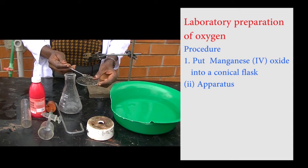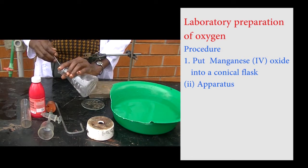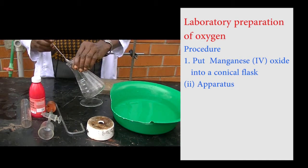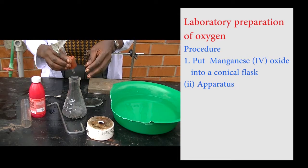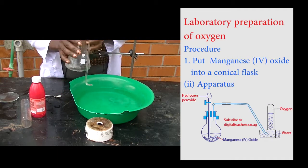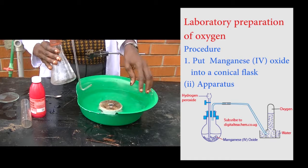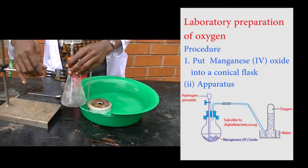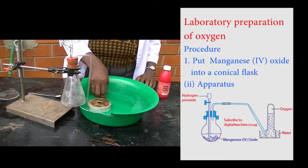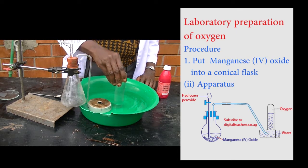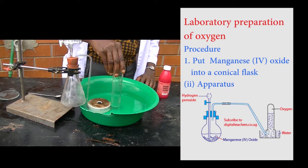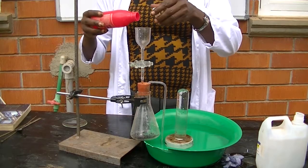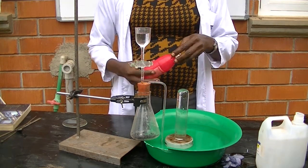The procedure is as follows. Put manganese dioxide into the conical flask. You slide, you do not drop. And you connect a separating funnel fixed in a cork and a delivery tube. We arrange the apparatus as follows. This is a beehive. You place a gas jar with water on top of a beehive. You place a separating funnel and you open the tap.